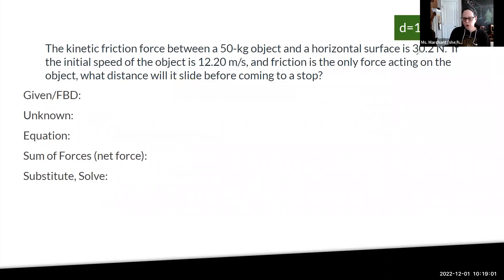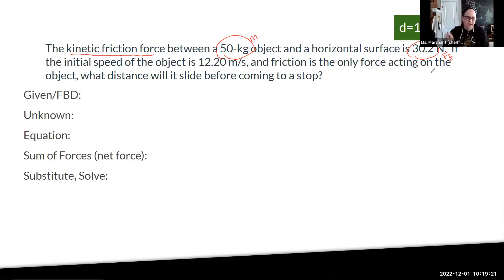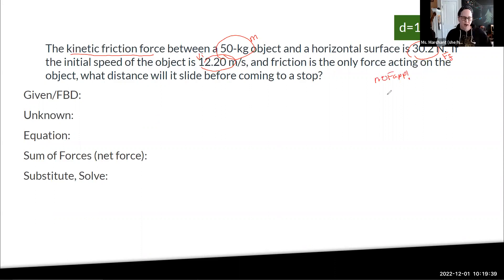50 kilogram object — that's our mass. Horizontal surface is 30.9. This is not our force of normal. The kinetic friction force between the object and the horizontal surface — it's just written really weird, but that's just the force of friction. It's a moving friction because they are sliding at the time. Initial speed — that's velocity initial. And friction is the only force, which means it's going to be very similar to the last one. No force applied. What distance will it slide before coming to a stop? In this case we're going to be solving for the distance rather than the speed.